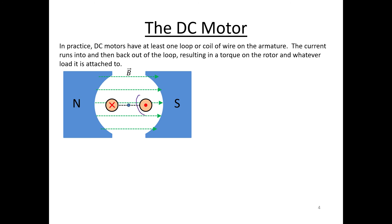So you have one side of the loop here carrying current out towards you. The current comes up, comes across, goes back in, and goes away from you. When you have this loop of wire, current carrying wire in the magnetic field, each one of those wires is going to feel a force in the opposite direction as the other.